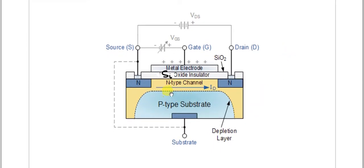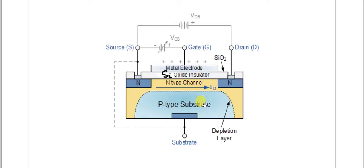The construction of this MOSFET consists of a bulk mass which is P-type material called a substrate, connected with the source. The substrate is a bulk occupying the major semiconductor material of the whole MOSFET. We then dope two N-type materials on opposite sides, leaving the substrate material in between inside the MOSFET device.